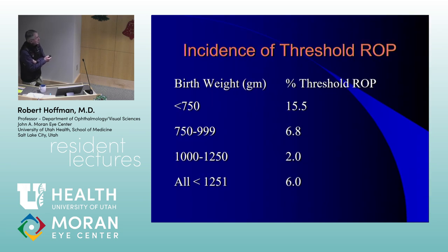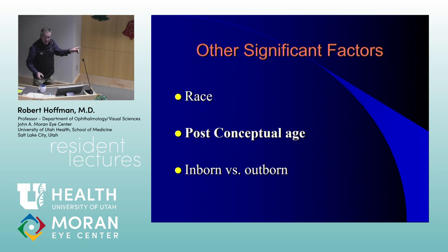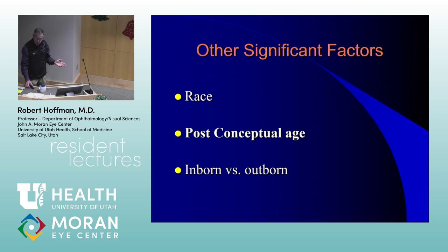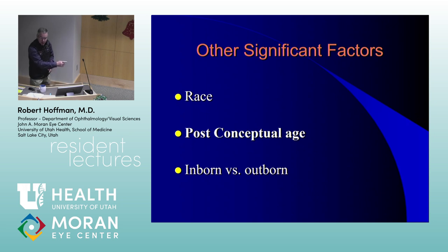The incidence of threshold ROP goes from 2% to 15% if you look across those birth weight strata. Being non-Caucasian was protective against developing threshold ROP. Active ROP events are related to post-conceptual age, not chronologic age from birth — that allowed us to change screening criteria so we weren't examining 23-week gestation infants at 26 to 27 weeks of age. If you were born in the hospital where you received your ROP care, you did better than if you were born elsewhere and transported in.